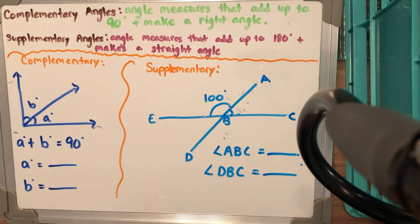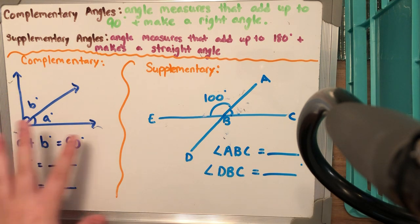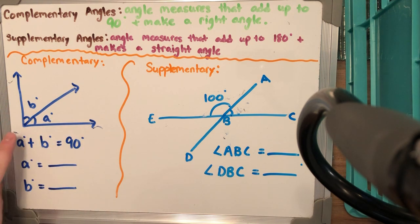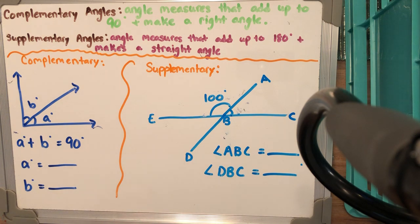A complementary angle is angle measures that when added together they add up to 90 degrees, and we know when something adds up to 90 degrees that makes a right angle. Supplementary angles are when angle measures add up to 180 degrees and they make a straight angle or a straight line. Here we have an example of a complementary angle where we see a right angle and another ray sticking out.